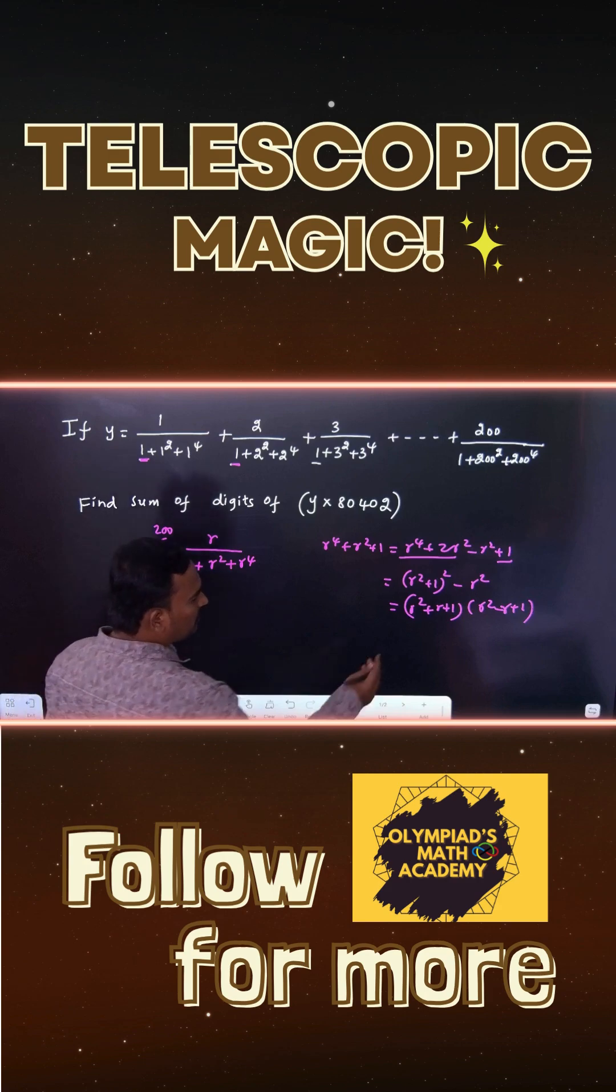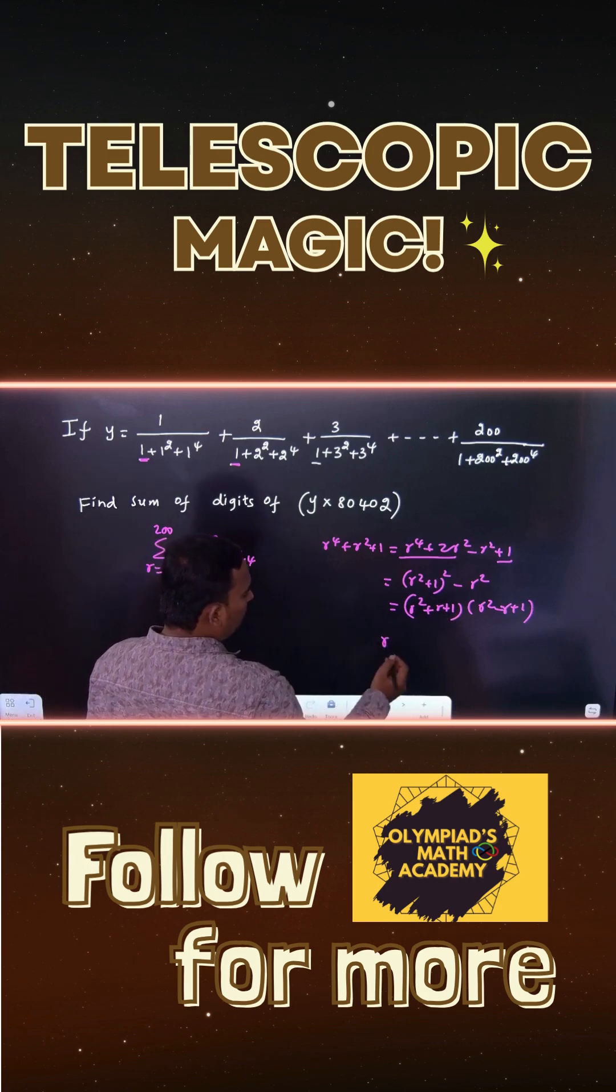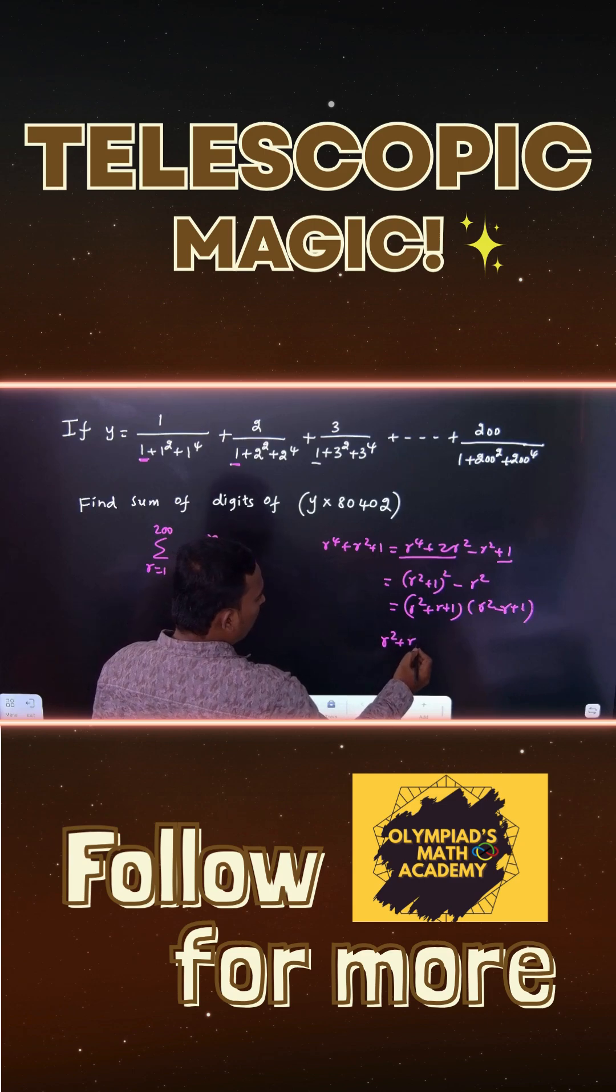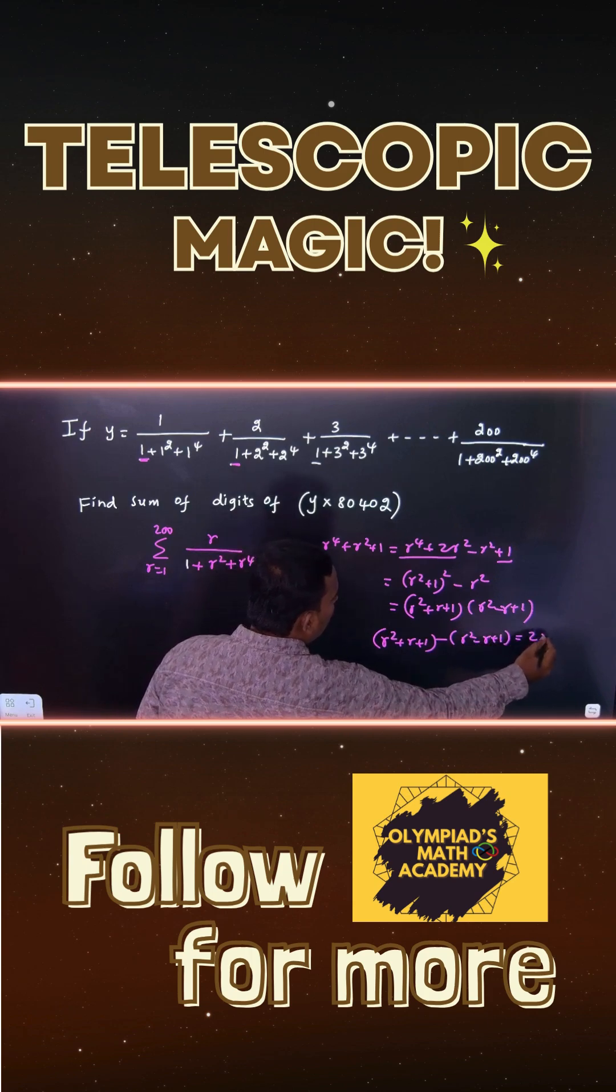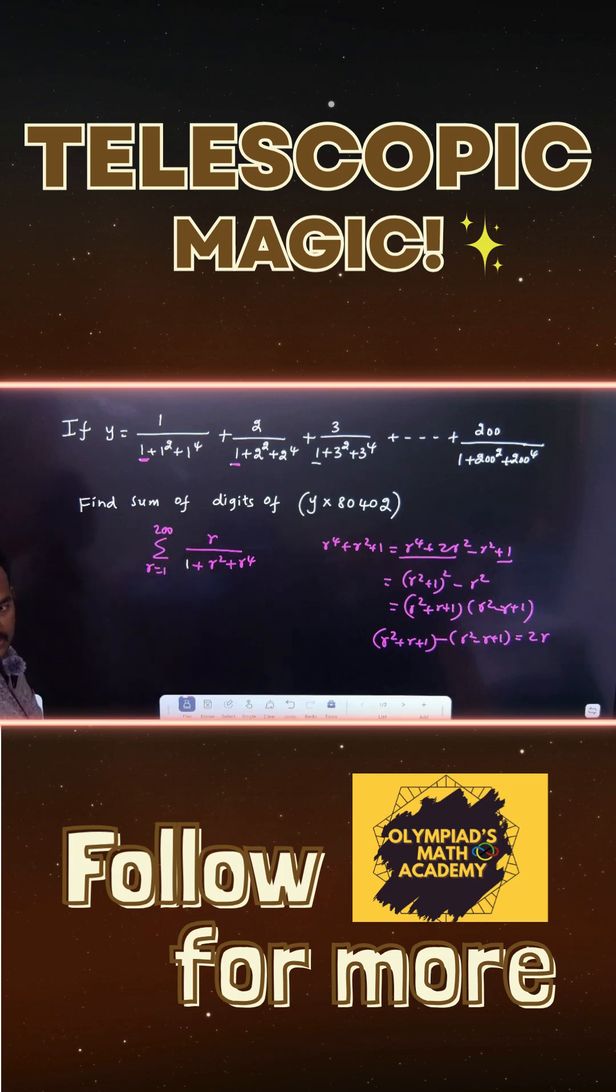You can take the difference of the highest minus the lowest term. You can see r squared plus r plus 1 minus r squared minus r plus 1, you get 2r. But here only r is there, so you have to multiply 2 and divide by 2.